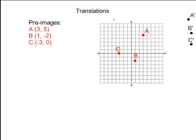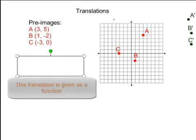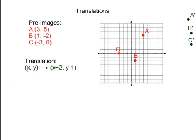Now let's get to the actual function, the translation that's going to tell us what to do with these pre-image points. Don't be intimidated by the kind of weird-looking symbols. It's not as bad as it looks. All it's really saying is take every x value from the pre-image points and translate it by adding 2 to it.